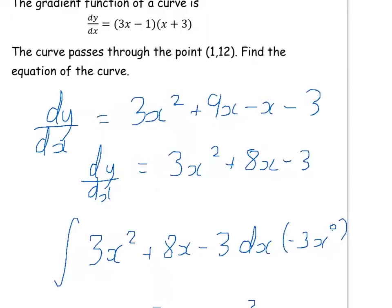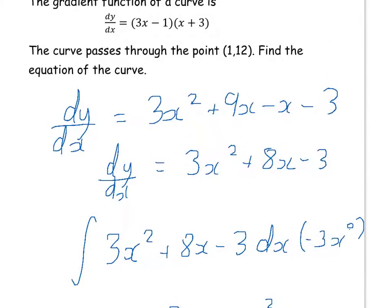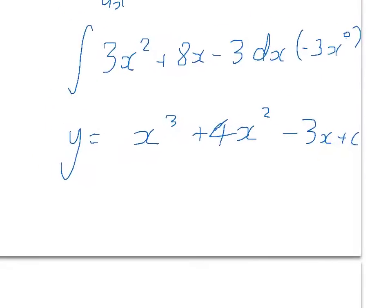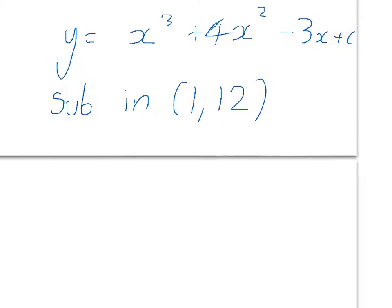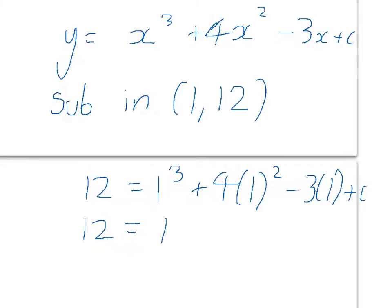Because we're told this curve passes through the point (1, 12), where 1 is the x component and 12 is the y component, we can find that constant value c. We substitute the values 1 and 12 into what we just found. So 12 equals 1 cubed plus 4 times 1 squared minus 3 times 1 plus c. So 12 equals 2 plus c.